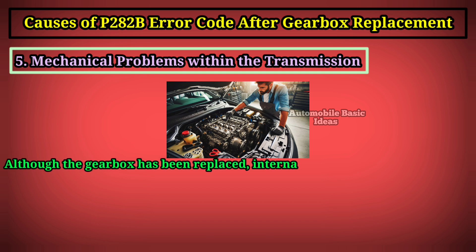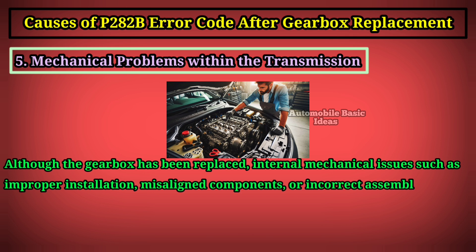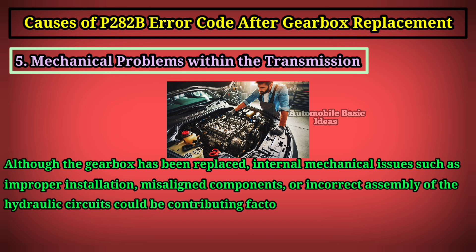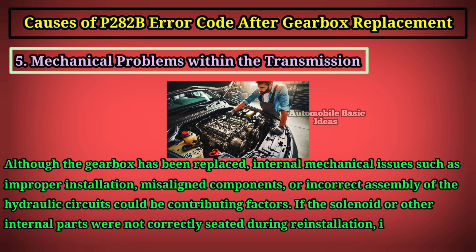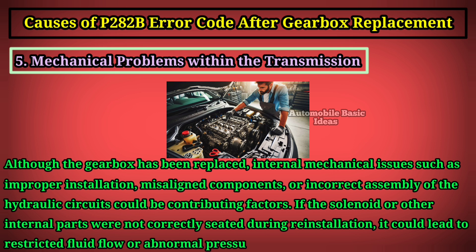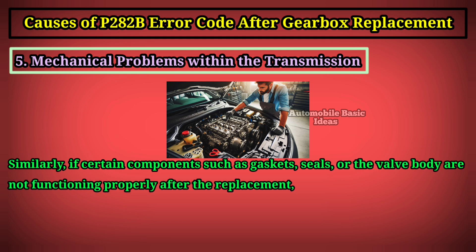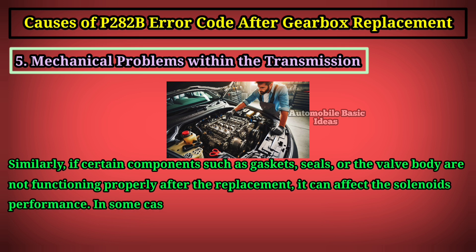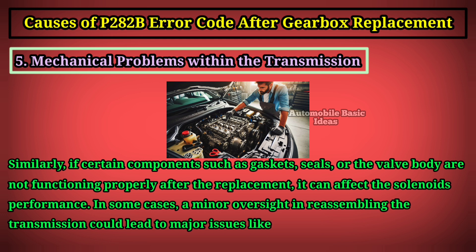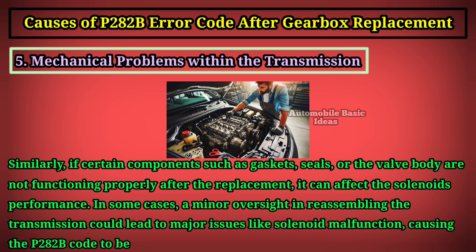Five: mechanical problems within the transmission. Although the gearbox has been replaced, internal mechanical issues such as improper installation, misaligned components, or incorrect assembly of the hydraulic circuits could be contributing factors. If the solenoid or other internal parts were not correctly seated during reinstallation, it could lead to restricted fluid flow or abnormal pressure levels. Similarly, if components such as gaskets, seals, or the valve body are not functioning properly after the replacement, it can affect the solenoid's performance.